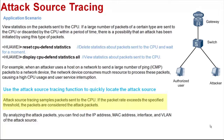Attack Source Tracing samples packets sent to the CPU. If the packet rate exceeds the specified threshold, the packets are considered attack packets. By analyzing the attack packets, you can find out the IP address, MAC address, interface, and VLAN of the attack source.